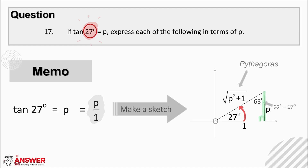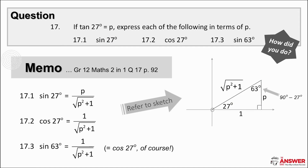Finally, completing the triangle: first we find the third side using Pythagoras, which is the hypotenuse — the square root of p squared plus 1 squared. Then the third angle, which in this case is 63 degrees. Now that the sketch is sorted, let's have a look at the part questions. For sin of 27, you can find it by simply reading off the sketch, as the question is already in terms of our original acute angle. Sine is opposite over hypotenuse, or y over r, so here it would be p over root p squared plus 1.